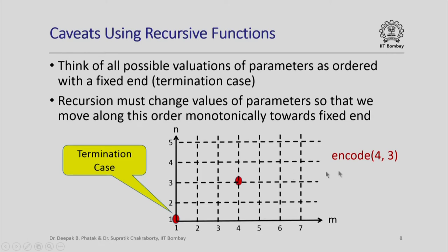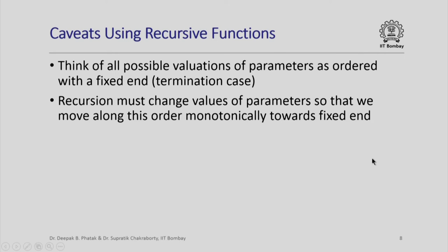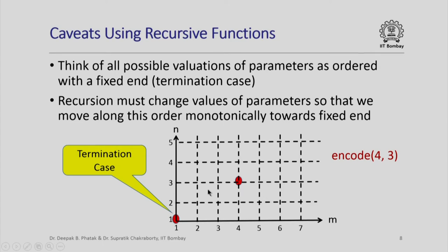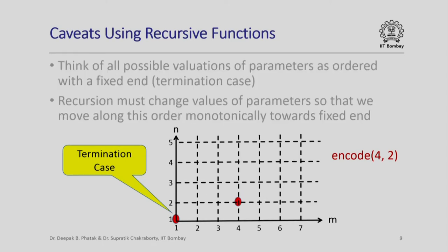How do we go about computing it? Looking at the function: if both m and n are greater than 1, decrement n; when n becomes equal to 1, decrement m. So we decrement n first to reach (4, 2), decrement n again to reach (4, 1), then decrement m to reach (3, 1), then (2, 1), and finally (1, 1) at which point we have terminated.